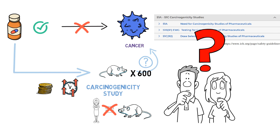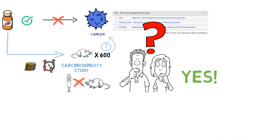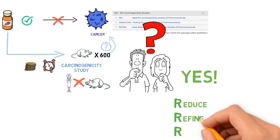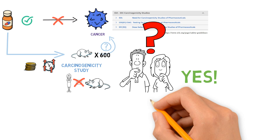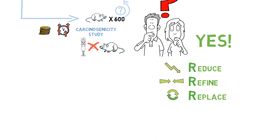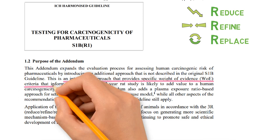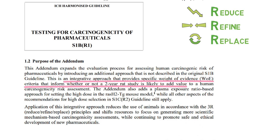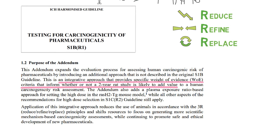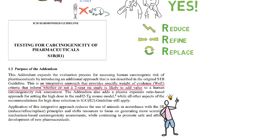So can we do anything to better predict human risk and reduce the use of animals? The good news is yes. Taking into account the principles of the three R's — reduce, refine, and replace — there has been a proposal to find alternative ways. An addendum to ICH S1b was published saying that an integrative approach with specific weight of evidence criteria can be used to inform whether an animal study adds value when assessing carcinogenicity.